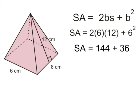And last, we simply add 144 to 36 to get a sum of 180 square centimeters, which is, of course, the surface area of our square pyramid.